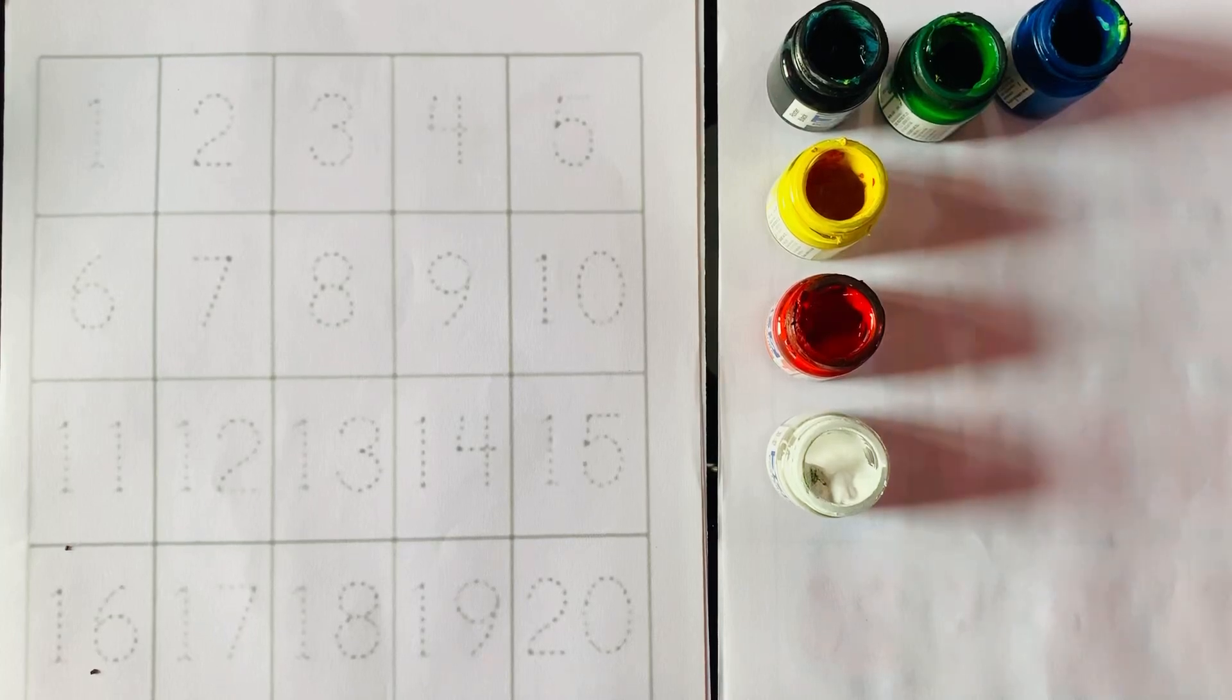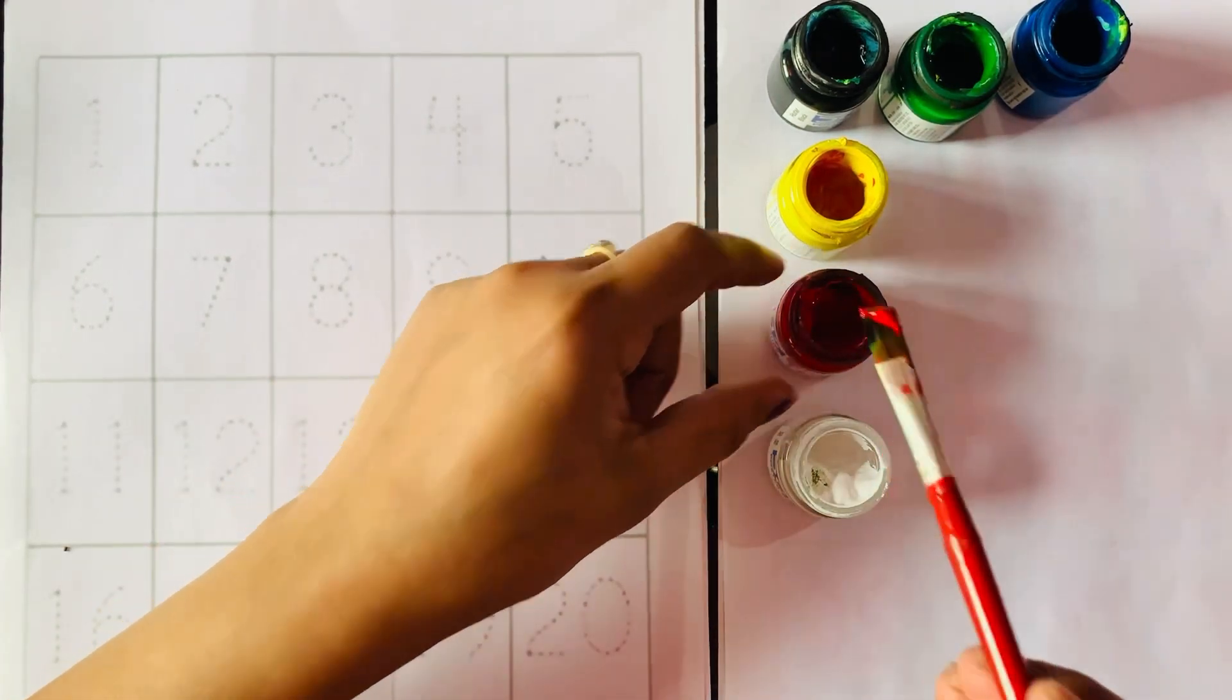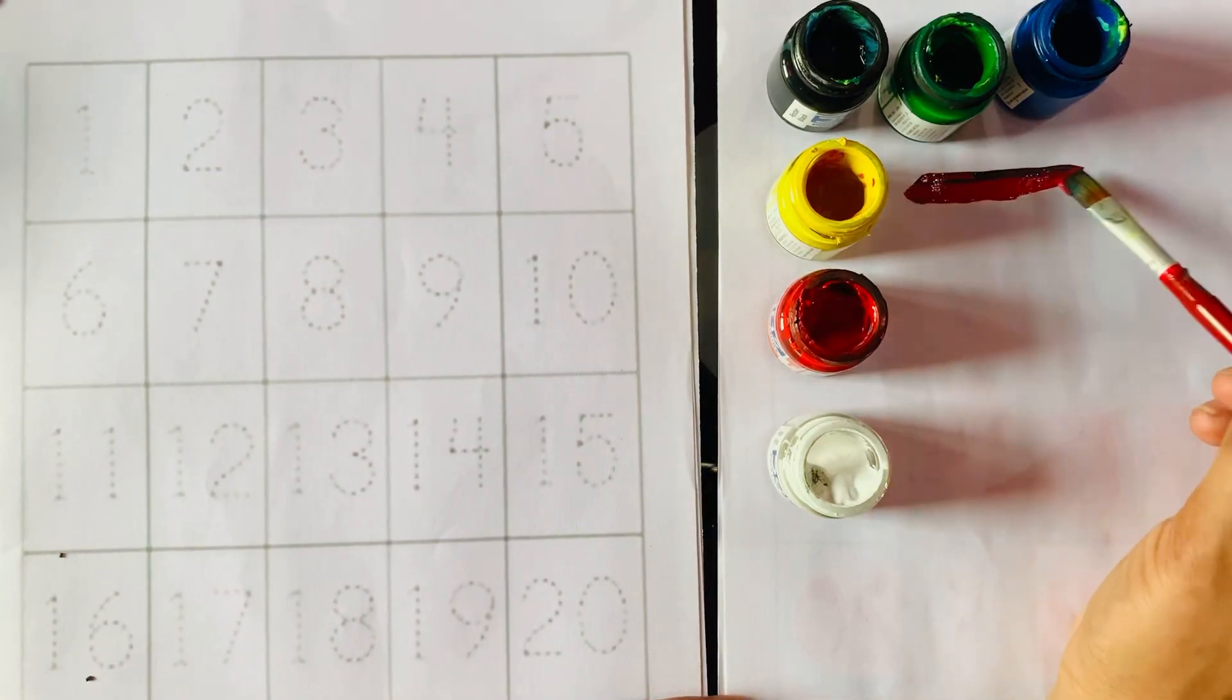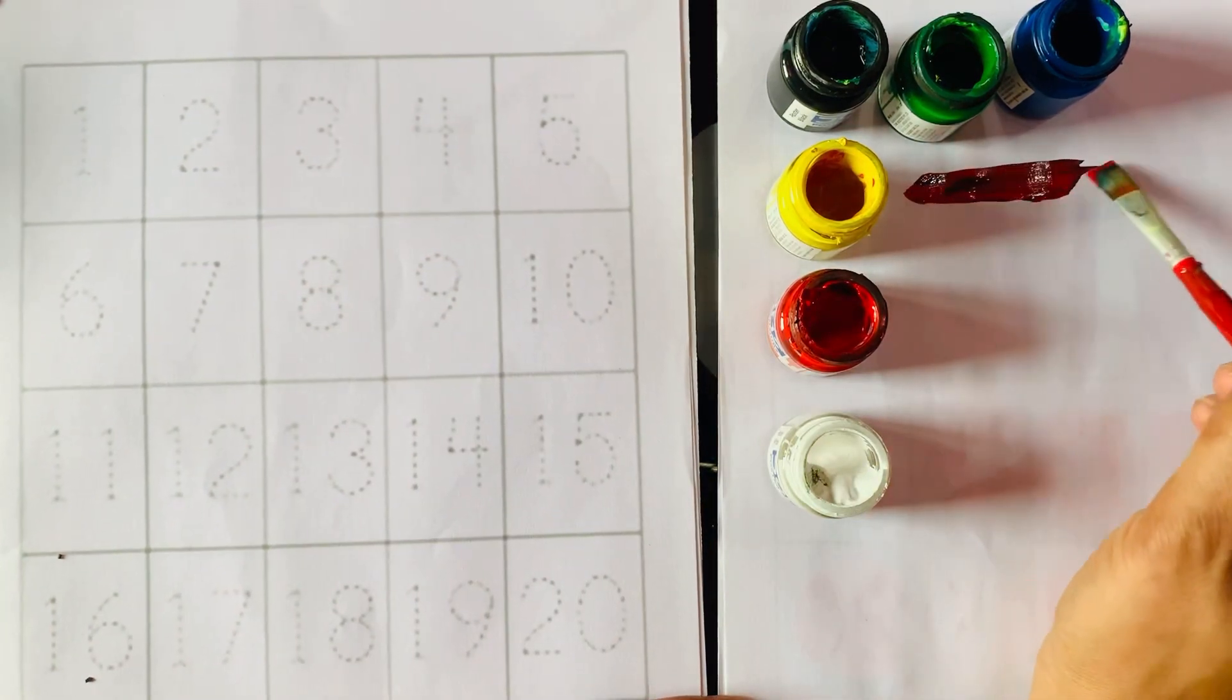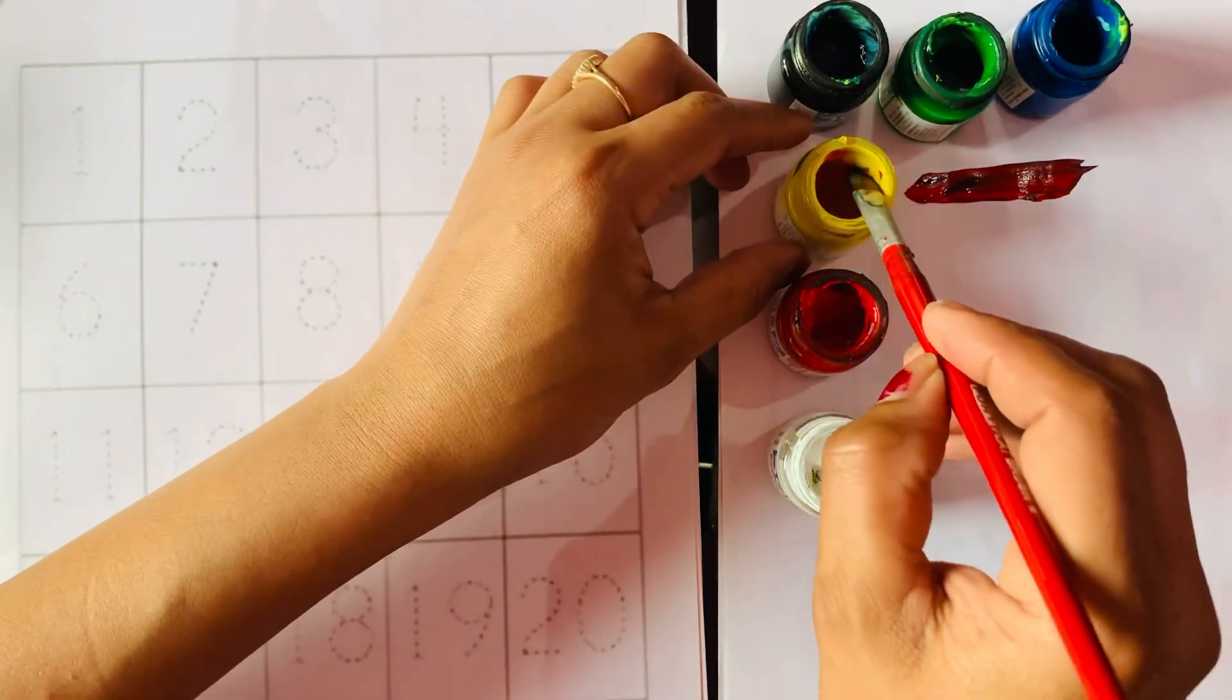Hello kids, today we learn 1 to 20 counting and first we know about some color names. First we draw a line in red color. It is a red color, till next we go.